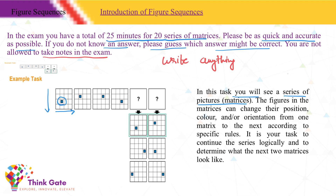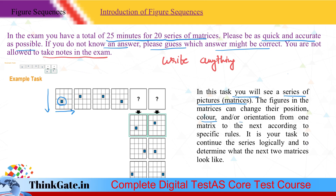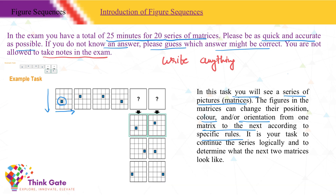We need to see what exactly is happening to the figure — how it is changing its position, what is happening to its orientation, or if it changes its color. We discuss the orientation from one matrix to the next according to specific rules, which we will cover in the coming slides.